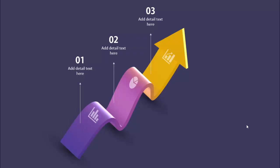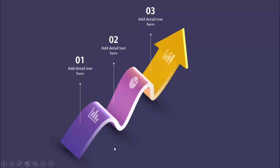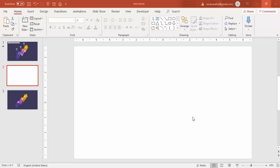Hello and welcome to my YouTube channel Powerpoint University. In this tutorial I'm going to show you how to create a 3D isometric arrow design in PowerPoint. You can see I have added three options with icons, and when you click it will change the border color. Let's see how to create this beautiful slide. Add a new slide and go to Insert.